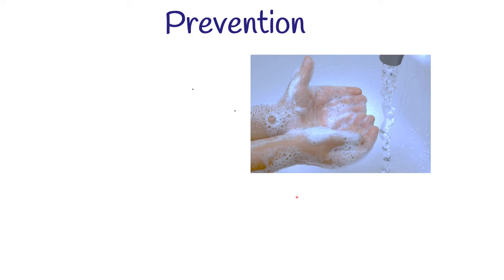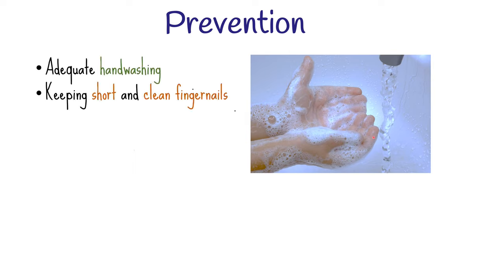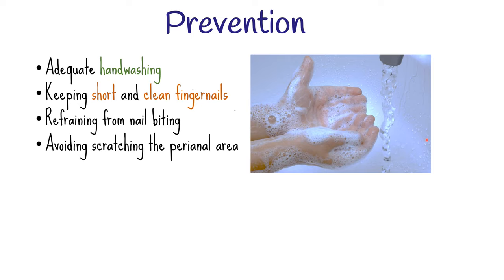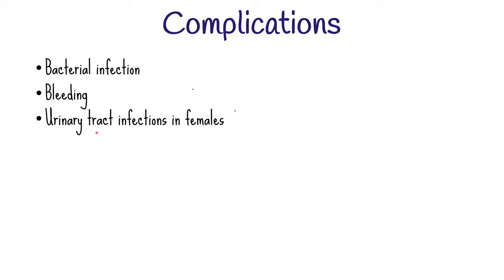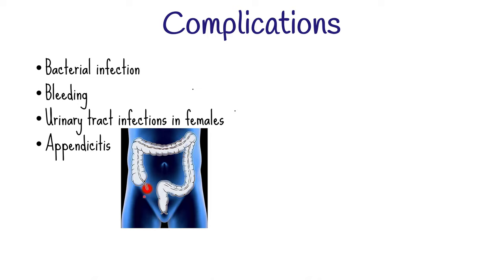One factor that undermines the control of pinworm infection is reinfection, so strict adherence to good hand hygiene is important. Adequate hand washing, ensuring fingernails are kept clean and short, refraining from nail biting, and avoiding scratching the perianal area are some of the ways pinworms can be prevented. Complications from having pinworms are rare but can occur, including bacterial infections — bleeding and infection can occur when the person scratches the anal area. In females, the worms can travel to the vagina and cause urinary tract infections, and in rare cases appendicitis can occur.